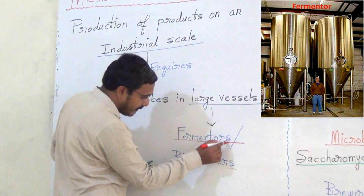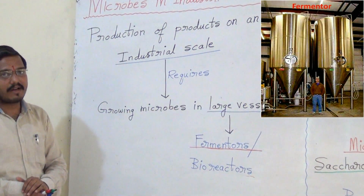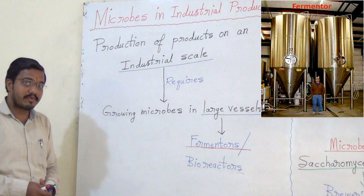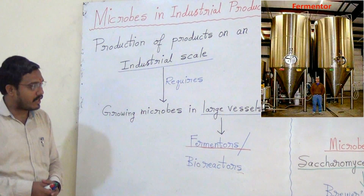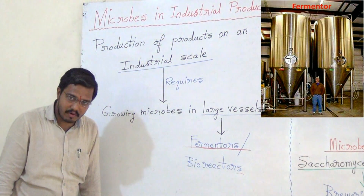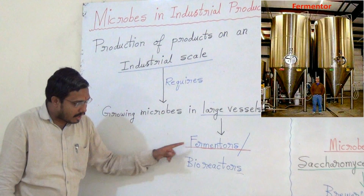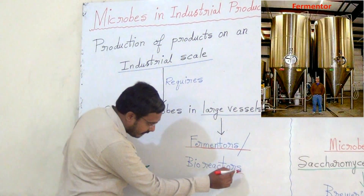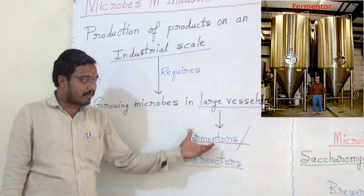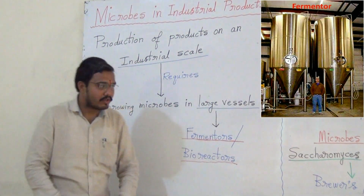What are those vessels called? Fermenters. Production of products on an industrial scale requires growing microbes in very large vessels, and those large vessels are called fermenters. Why are they called fermenters? Because fermentation takes place in them. They are also called bioreactors. These fermenters and bioreactors have all the suitable facilities to grow the microbes.